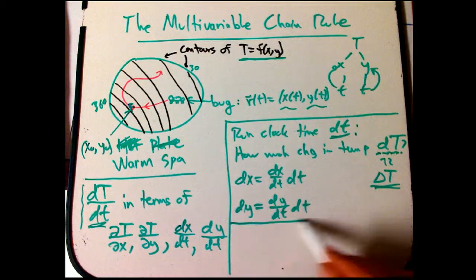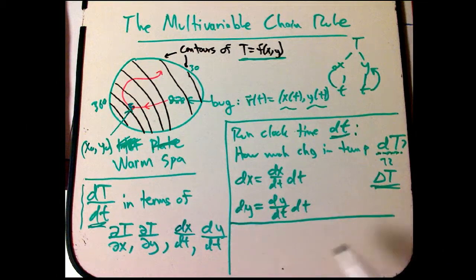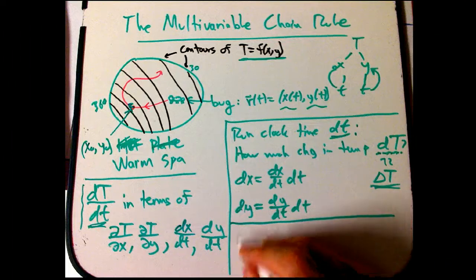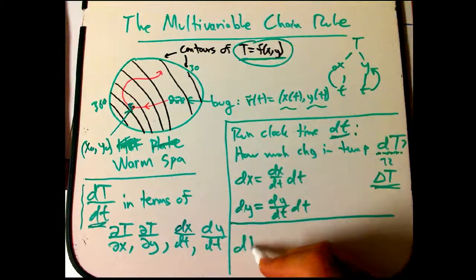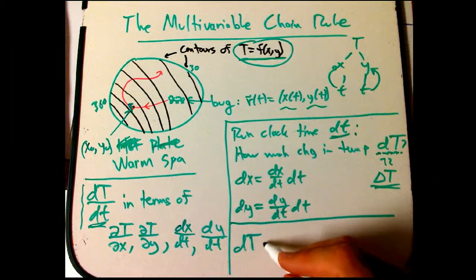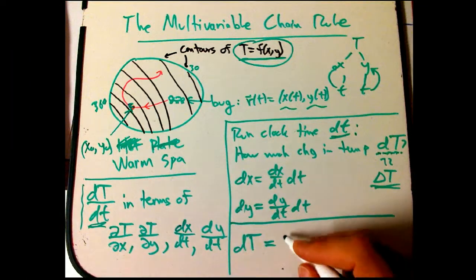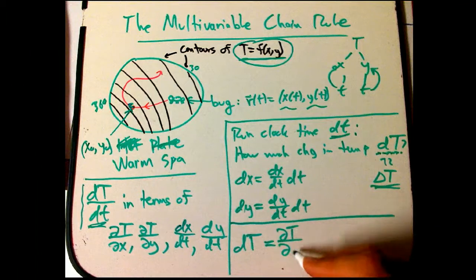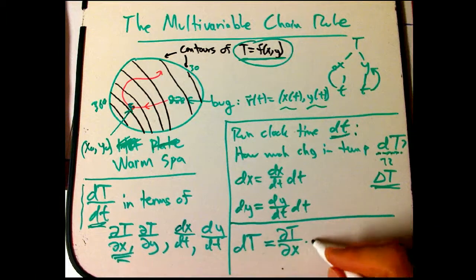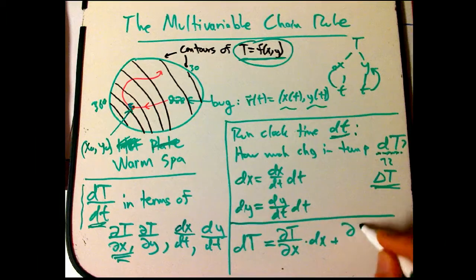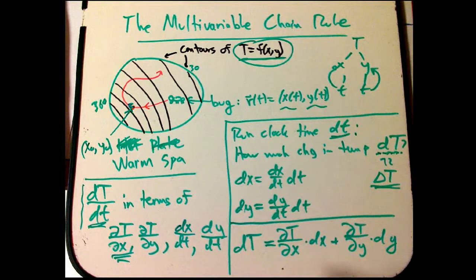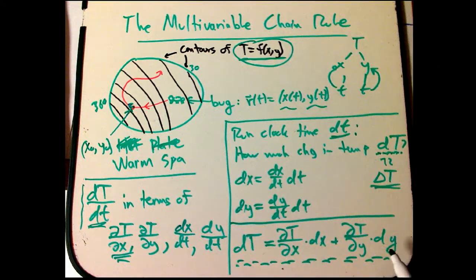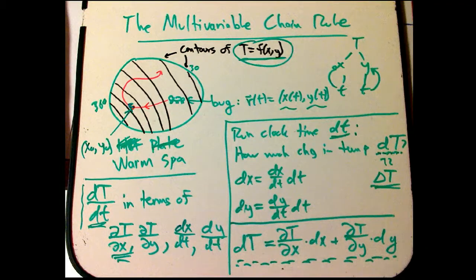Now, this is exactly what the differential form of the tangent plane equation is supposed to say. It says that if I have a function t equals f of xy, and I want to know how much, to the first order approximation, the temperature changes, it's exactly given by how sensitive the temperature is to a change in x times how much x changed, plus how sensitive is the temperature to a change in y times how much y changed. That's exactly one form of the tangent plane equation, the differential form. It focuses on the change in everything, not just the actual value, but the changes. And that's what calculus is about, the study of change.